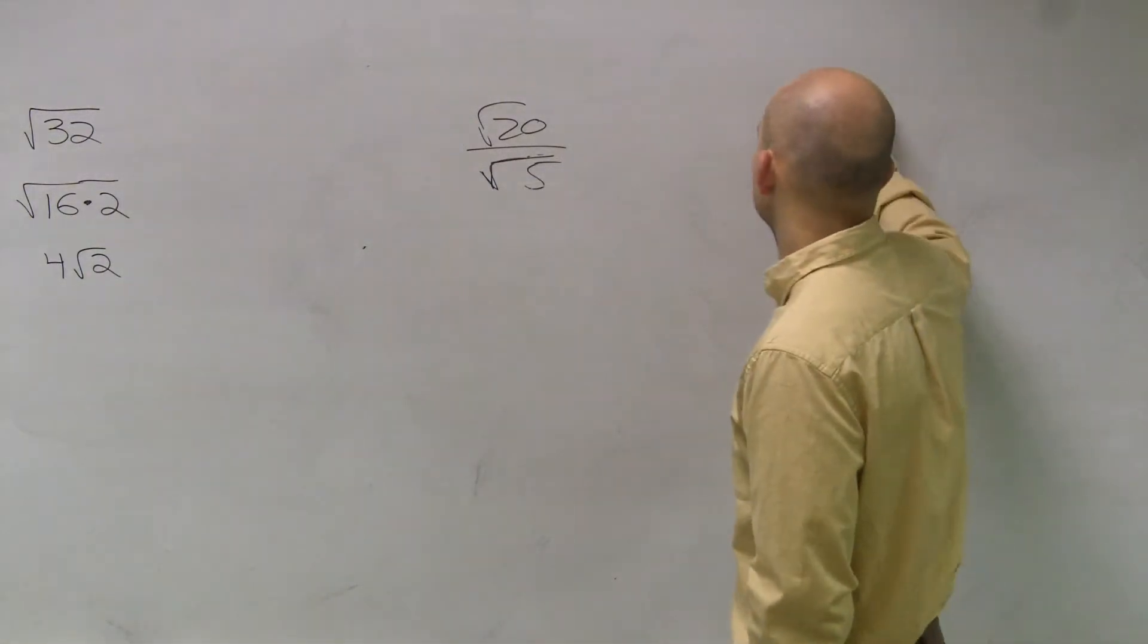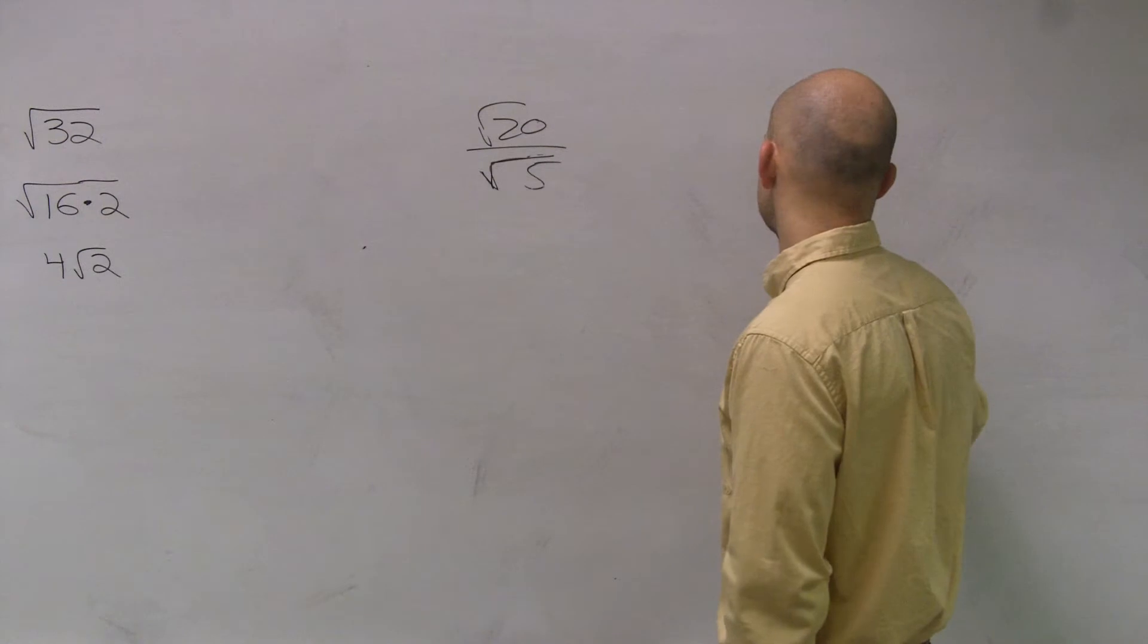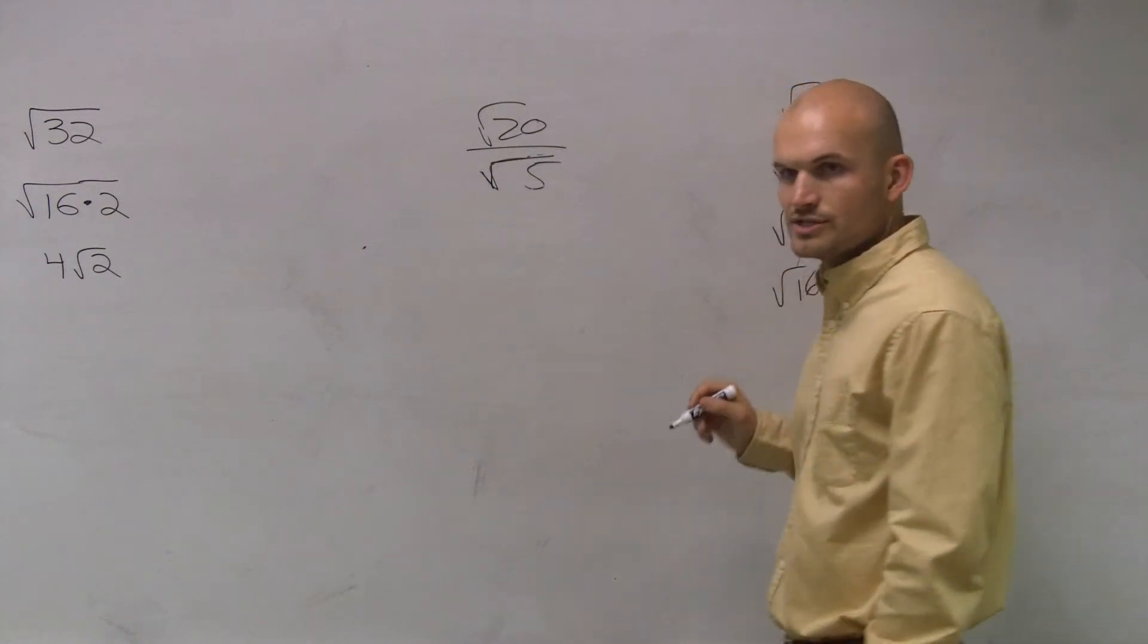Well, let's go through the square numbers again. Square root of 1, square root of 4, square root of 9, square root of 16. What is the largest one of those that goes in? 4.